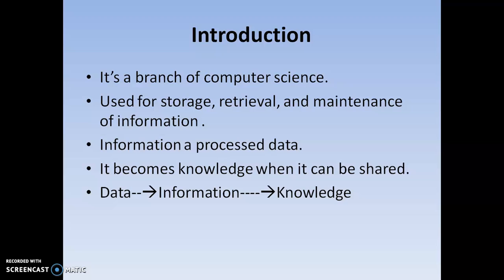What is the meaning of information? The processed form of data is called information. Data is the raw form. Whenever data gets processed, that is called information. When that particular information becomes knowledge and is shared, then only it becomes knowledge. So the relation is: initially data is in raw form, then it is processed and termed as information, and next it becomes knowledge because it was shared.